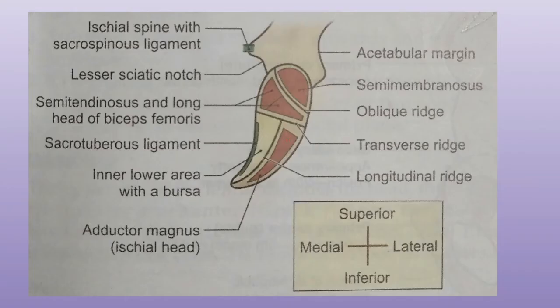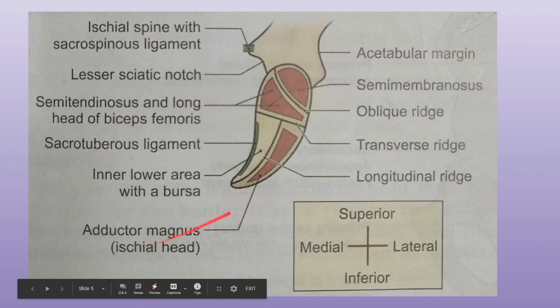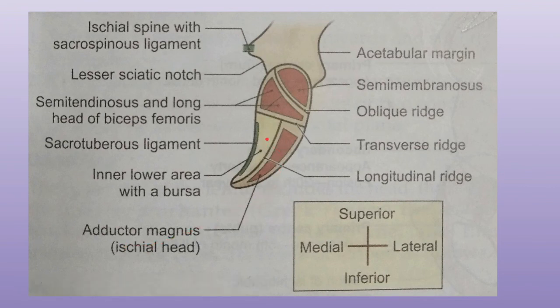At the ischial tuberosity, the supralateral part gives origin to the semimembranosus muscle, and the inferomedial part gives origin to the semitendinosus and the lower head of the biceps femoris. In the lower outer area, the adductor magnus (ischial head) originates. The lower inner part is covered with fibrofatty tissue and a bursa supporting body weight in sitting, while during standing it is covered by gluteus maximus. The sharp medial margin gives attachment to the sacrotuberous ligament and the lateral border gives attachment to the ischiofemoral ligament.